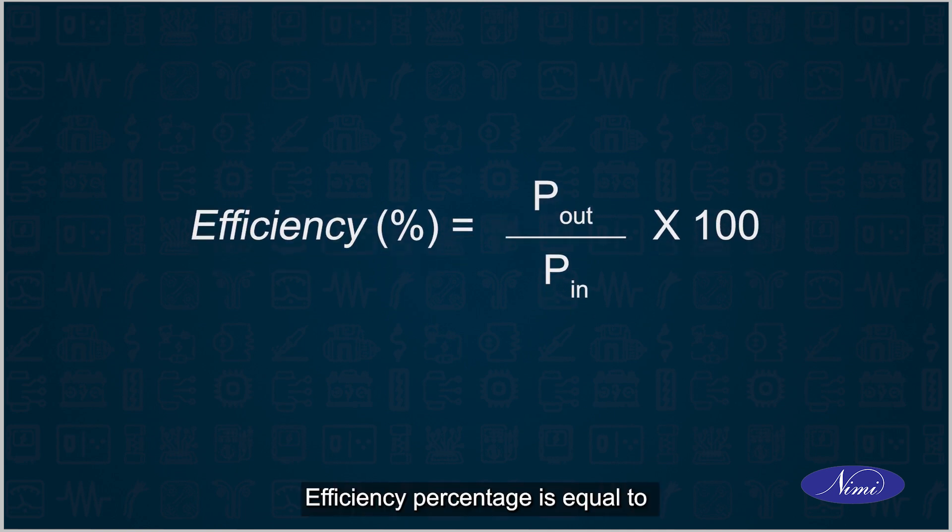Efficiency percentage is equal to power out by power in into 100.